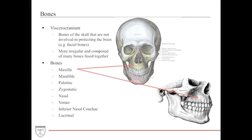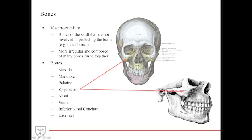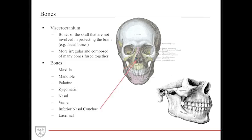Now I'll discuss the viscerocranium — the bones of the skull that don't protect the brain. These are the more irregular-shaped bones covering the aesthetic, unique human structure of the skull. It is defined by having 14 bones: two maxillas fused in the middle, one mandible, two zygomatic bones, palatine bones, two nasal bones, one vomer in the middle forming a portion of the bony nasal septum, two inferior nasal conchae, and two lacrimal bones that form the medial portion of the orbit.